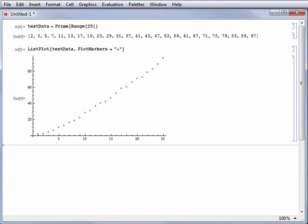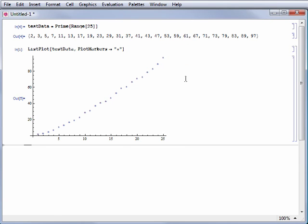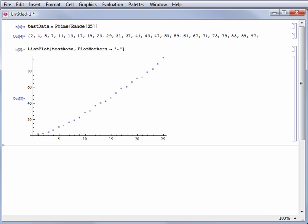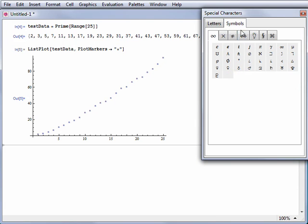Mathematica contains many special characters and symbols that can also be used as points in a plot. You can access these from the Special Characters Palette or by using the keyboard alias for the character you want to use. To view the keyboard alias for a character, simply mouse over it in the palette.